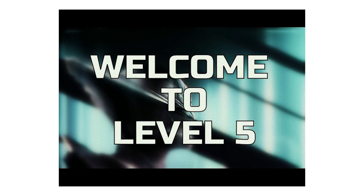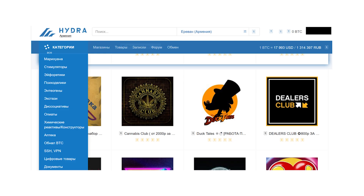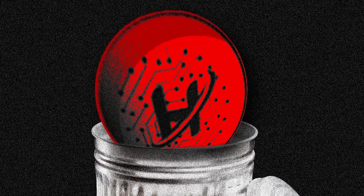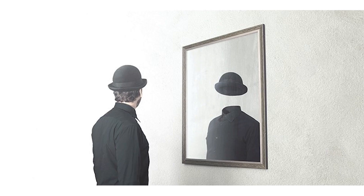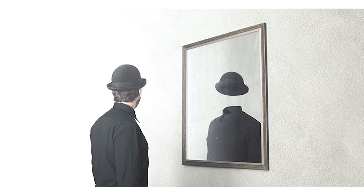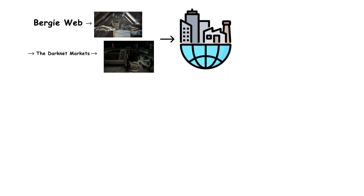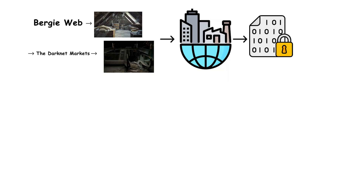Welcome to Level 5: the darknet markets. Here, the internet turns into a black bazaar — the chaotic economy of the underworld, where anonymity becomes currency and trust wears a mask. If the Bergeweb is the internet's forgotten attic, this level is its underground mall — sprawling, encrypted, and alive 24/7.